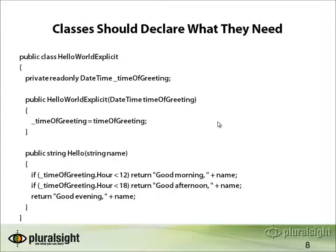Your classes should instead declare what they need. With the HelloWorld example, we need a DateTime to determine which greeting to return. We could pass in a DateTime through the constructor or into the method itself. If we don't want to pass in a value object like DateTime, we could pass in an interface such as ICalendar that implements a Now method. We could write an implementation using System.DateTime.Now by default, but in tests we could use an AfternoonICalendar that always returns 2pm to verify we receive 'Good Afternoon'.